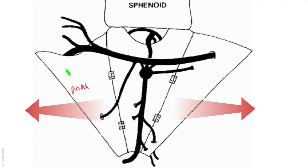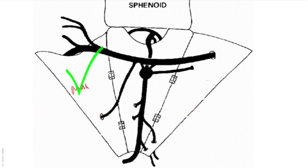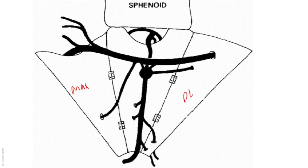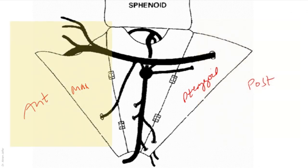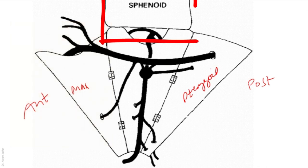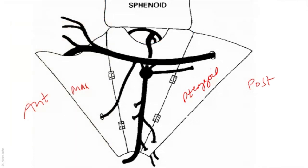This will be the maxilla and this will be the plate of bone between the medial and lateral pterygoid plates. This side is posterior and this side is anterior. The sphenoid is located superiorly, and the black structures are the maxillary nerve and its branches — the maxillary nerve coming from posteriorly.